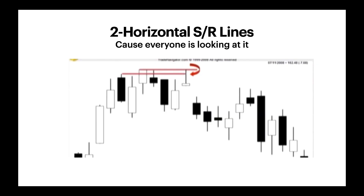Now we discuss horizontal support and resistance lines and why they're important. Most traders look at these levels, so you need to know what others are seeing — because if they have the same support and resistance lines as you, they'll be exiting or initiating positions at the same levels. Make sure you draw your trend lines and resistance lines as accurately as possible, because that increases your chances of winning the trade.